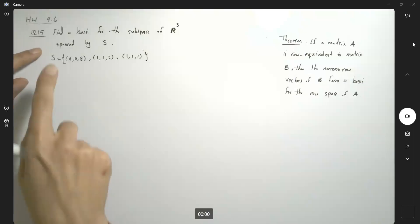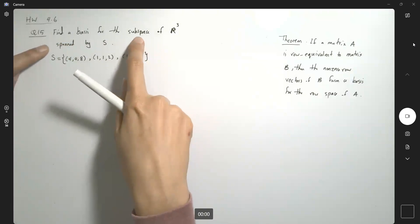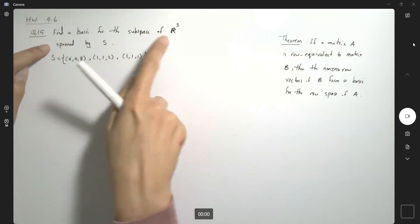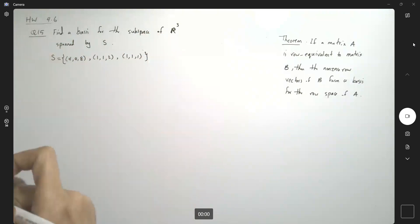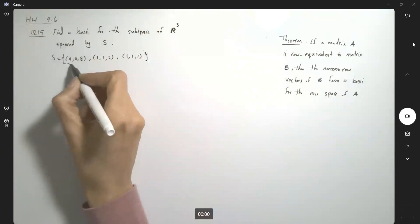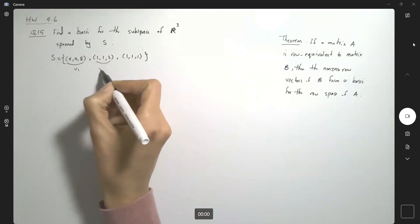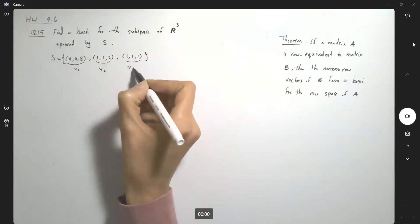Question 15, it says find a basis for the subspace of R³ that is spanned by this set. So this set has three vectors, one, two, and three.